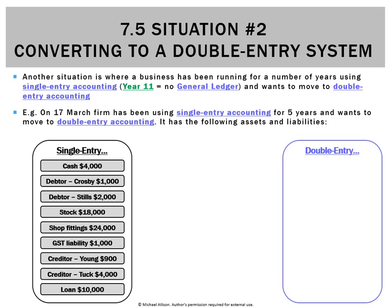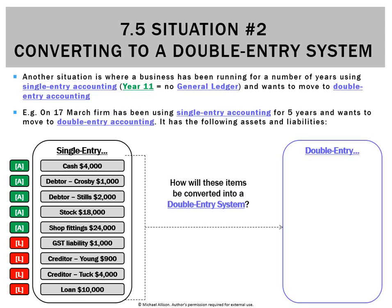In the single entry system we've got the following items: cash of four grand, debtor Crosby a thousand, debtor Stills two thousand, stock of eighteen, shop fittings of twenty four, and then some liabilities — GST a thousand, two creditors, and a loan. So there's our items: five assets and four liabilities. What we need to do is get them from the single entry system into a new double entry system.